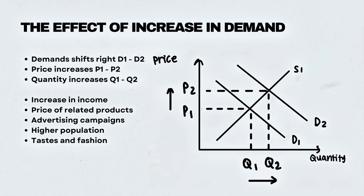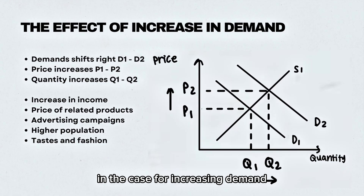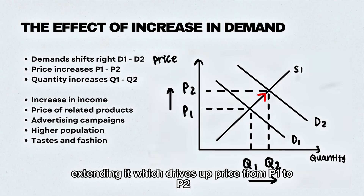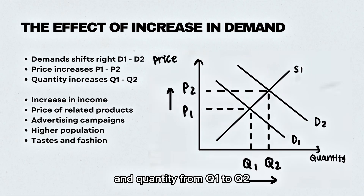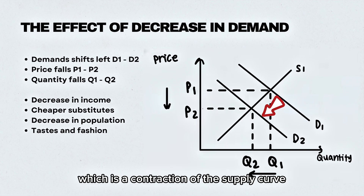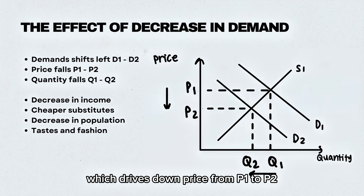In the case of increasing demand, demand shifts from D1 to D2. This causes a movement along the supply curve, extending it, which drives up price from P1 to P2 and quantity from Q1 to Q2.